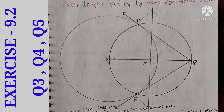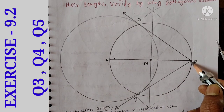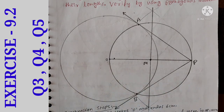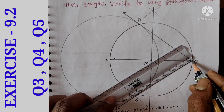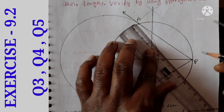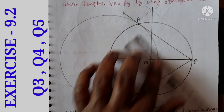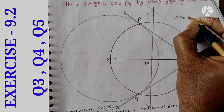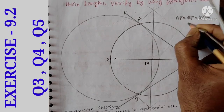We measure the tangents using a scale. AP = BP = 8 cm. So tangent AP equals tangent BP equals 8 cm, measured by scale.